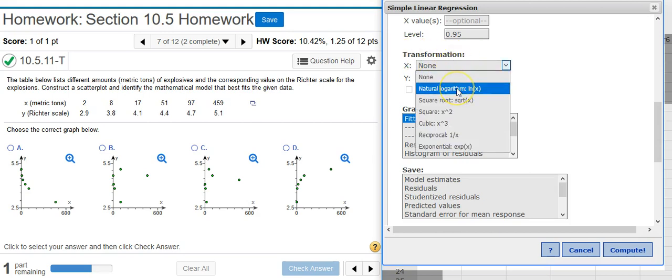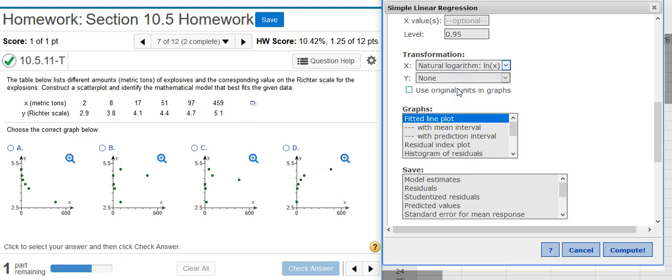For the x, I want to transform the x for the natural log. I don't want any transformation for the y. And I want to select this box here for Use Original Units and Graphs. You'll see in a moment why we need to check this box.